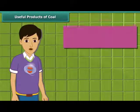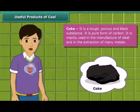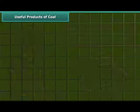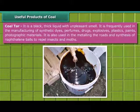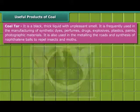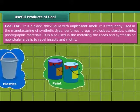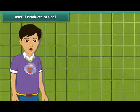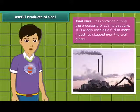Let us know about coke first. Coke is a tough, porous and black colored substance. It is mainly used in the manufacturing of steel and extraction of many metals. Coal tar is a black, thick liquid with an unpleasant smell. It is frequently used for manufacturing of synthetic dyes, perfumes, drugs, explosives, paints, plastics and photographic materials. To obtain coke from coal, coal gas is produced. In many industries located near coal plants, it is used as a fuel.